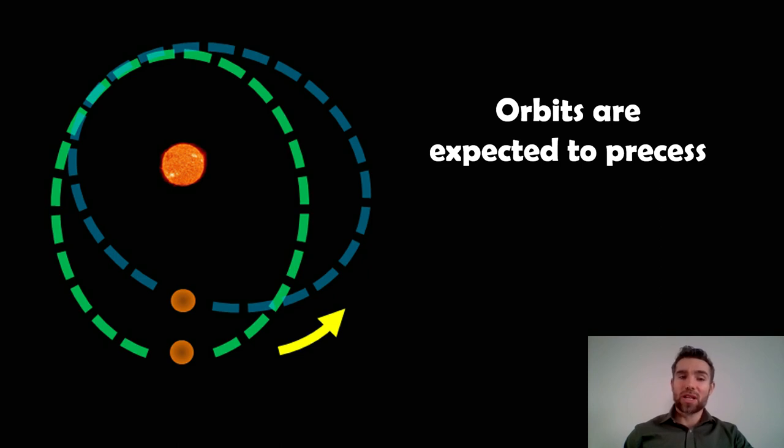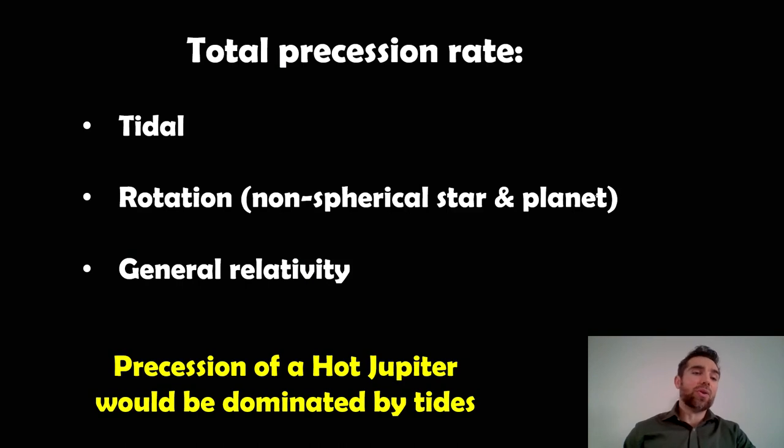Now, orbits are expected to precess. Pretty much all elliptical orbits are going to precess for some reason or another, and there's a variety of reasons as to why that can occur. It can occur due to tidal forces. So the star on the planet are going to cause tidal bulges on one another. There's going to be rotation-induced ones where the star and the planet are not spherical because they're rotating. That can also cause precession of the orbit. And also there's some effect from general relativity as well.